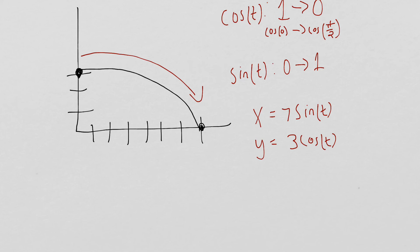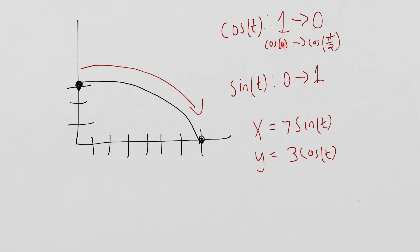In general, if sine is the x value and cosine is the y value, we're always going to be moving clockwise, and if cosine is the x value, sine is the y value, we're going to be moving counterclockwise because of how cosine and sine behave as our input becomes larger. And then our coefficients are going to affect our semi-major and our semi-minor axis of our elliptical path.